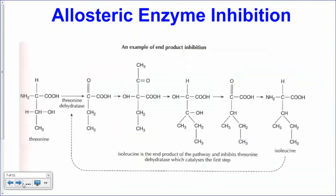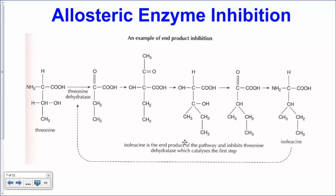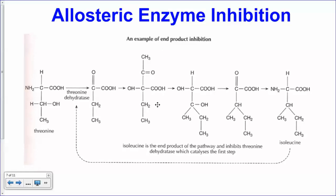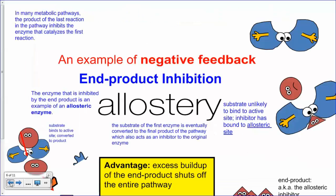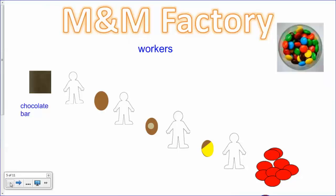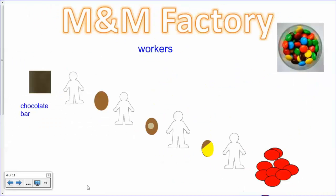There's a specific example you can pause and take a look at, but that's a lot to stomach. Pause the video and take a look — that is what we call allosteric enzyme inhibition. Now I'm going to go get some M&Ms.